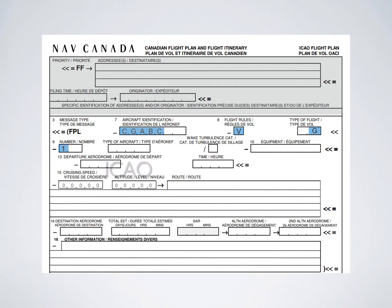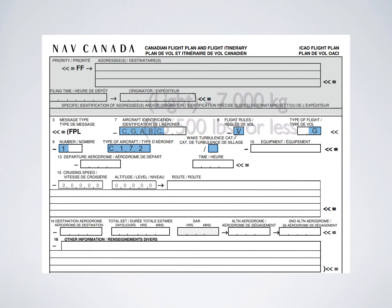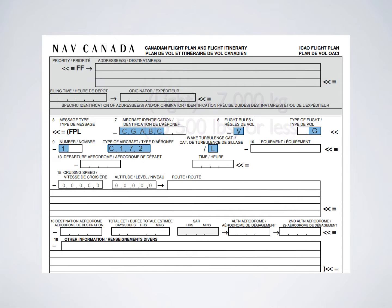For number of aircraft, it should be one. For type of aircraft, use your ICAO designation - if you don't know it, look it up on the website. For example, if you're flying a Cessna 172, it's C172. For wake turbulence category, for your flight test you're almost certainly flying a light aircraft, so just put L.